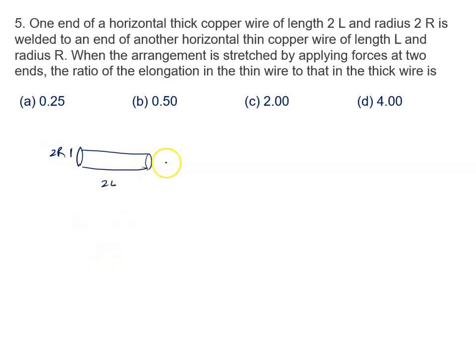It is welded to an end of another horizontal thin copper wire of length L. Length is given to us, half of this, that is L, and radius is also half, that is capital R.